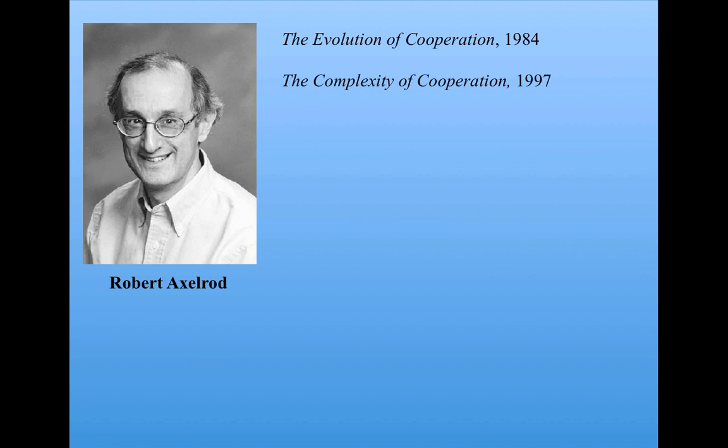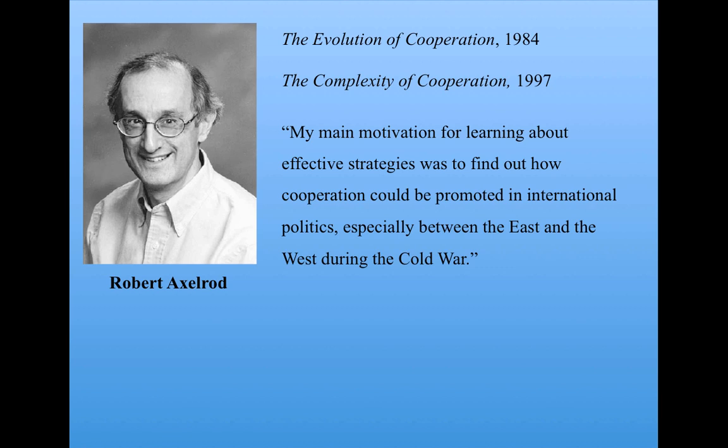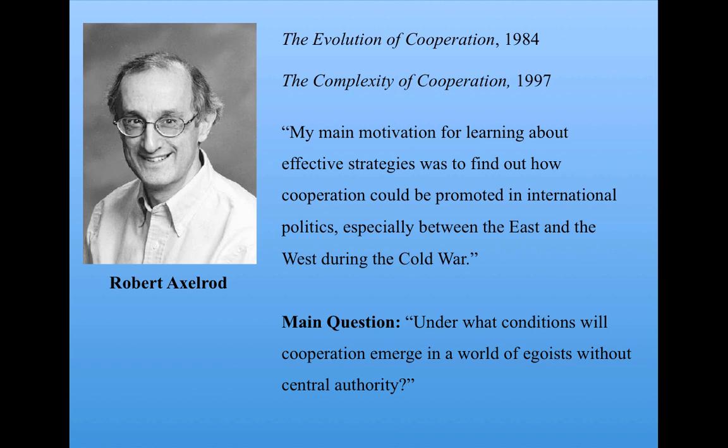Robert Axelrod is a political science professor at the University of Michigan who has been studying the Prisoner's Dilemma and variants of it for over 30 years. He's written two very influential books: The Evolution of Cooperation and The Complexity of Cooperation. According to Axelrod, his main motivation was to find out how cooperation could be promoted in international politics, especially between East and West during the Cold War. His main question is: under what conditions will cooperation emerge in a world of egoists without central authority? This remains an extremely important question today.